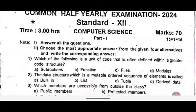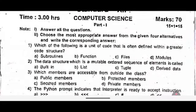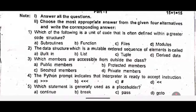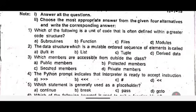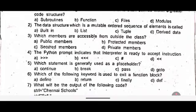Part 1: Answer all the questions. Choose the most appropriate answer from the given 4 alternatives and write the corresponding answer. First one: which of the following is the unit of code that is often defined within a greater code structure? Second one: the data structure which is a mutable ordered sequence of elements is called dash. Third one: which members are accessible from outside the class? Fourth one: the Python prompt indicates the interpreter is ready to accept instruction.